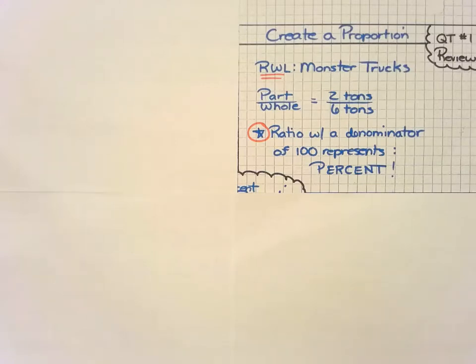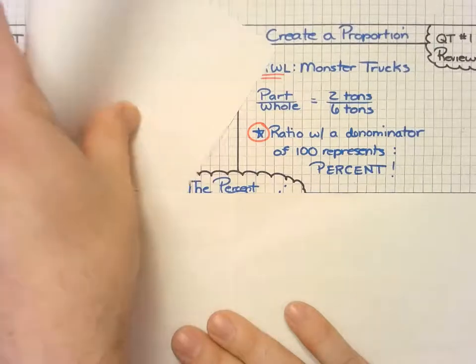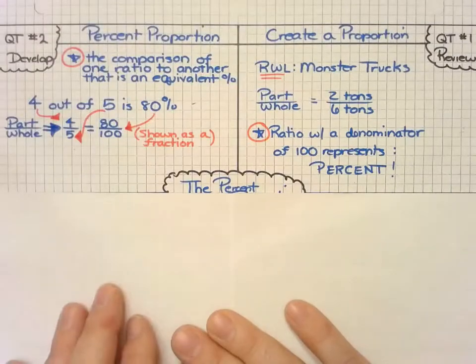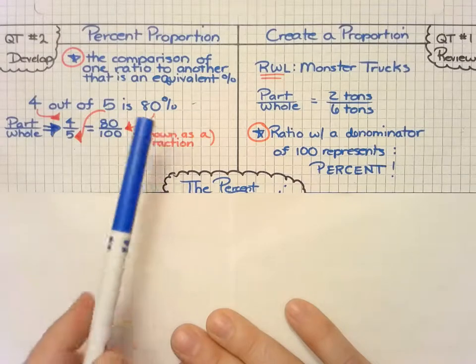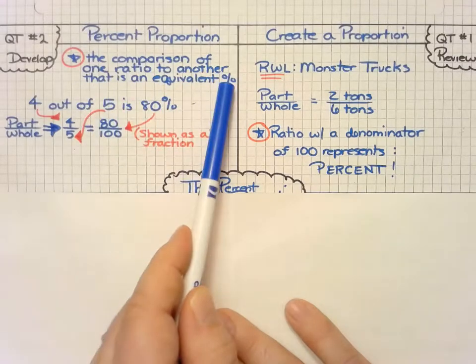So if we have 80 percent, that's 80 over 100, which brings us into our percent proportion. Percent proportion is the comparison of one ratio to another that is an equivalent percentage.